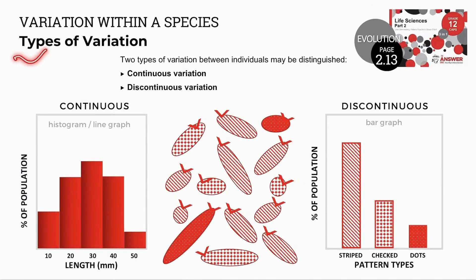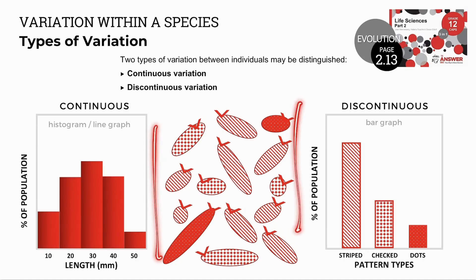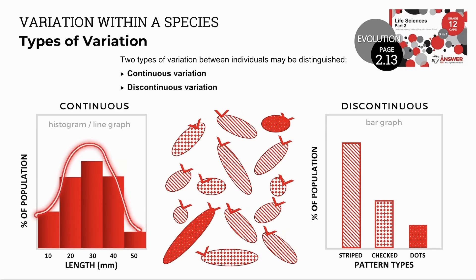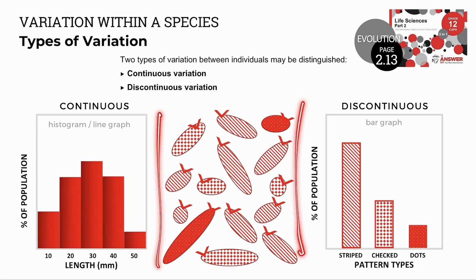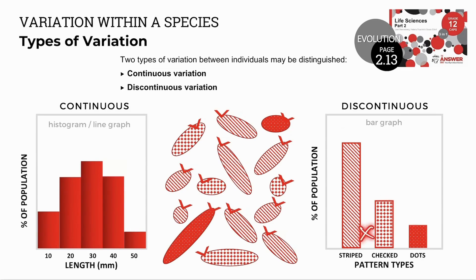Now we look at types of variation within a species. We have two types: one, continuous, and two, discontinuous. Using a population of hypothetical organisms, if we look at variation in their length, they can be any length from 10 to 50 millimetres — a continuum of values on the x-axis with no gaps. This is known as continuous variation and we show this data in a histogram or line graph. If we analyze the variation in their patterns, they have three distinct categories — either striped, checked, or dotted — with no intermediate forms. This is discontinuous variation, shown in a bar graph with gaps to indicate the distinct categories.